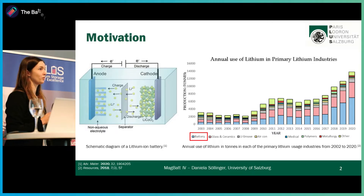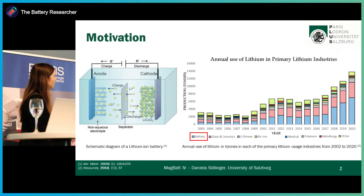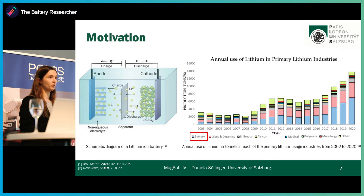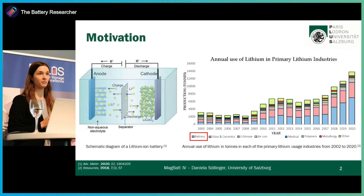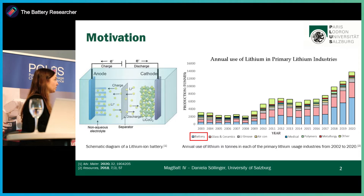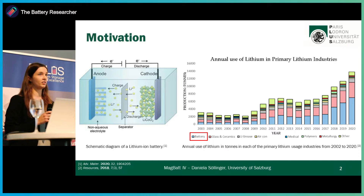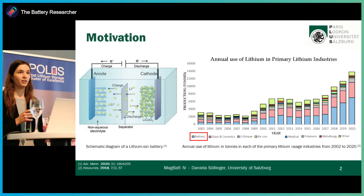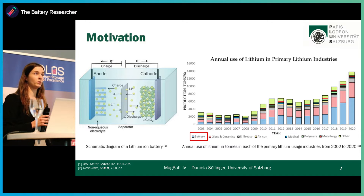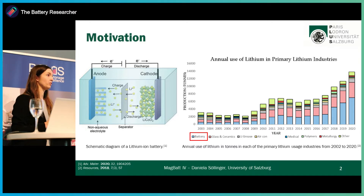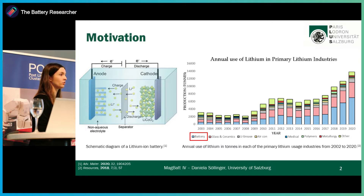As all of you already know, batteries are well-established energy storage devices, whereas the lithium-ion battery is the most used battery type today. Due to the high consumption of lithium, especially due to the use of lithium-ion batteries, the demand for lithium has increased in the last years. However, lithium is listed as a critical material due to its low accessibility, caused by the primary control of lithium resources by a few countries.